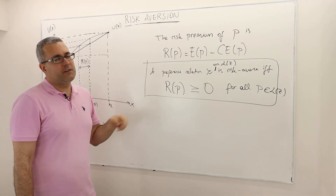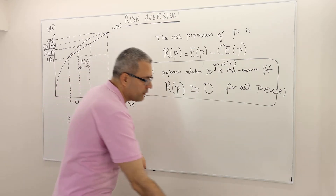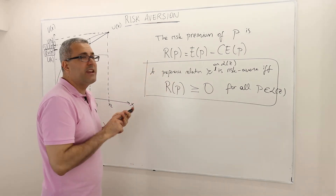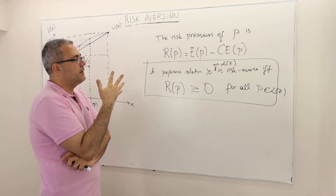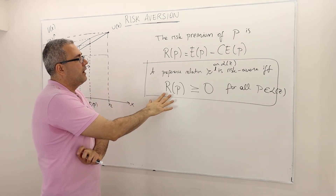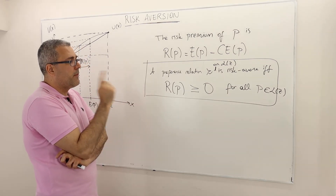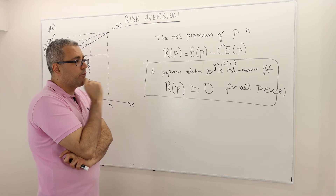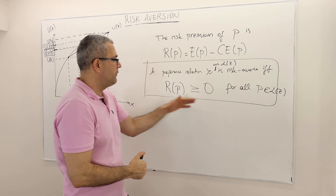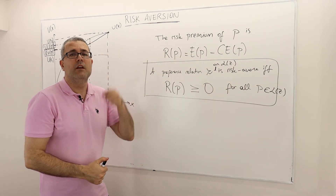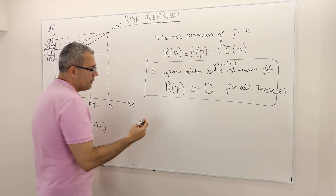This is a theorem we can derive from the definition of risk aversion and the definition of risk premium. I'm going to give this as a definition, so I won't prove it, but the proof is pretty straightforward. Another way of defining risk aversion is such that the risk premium must be non-negative for every lottery in the set — and there are infinitely many lotteries to check.